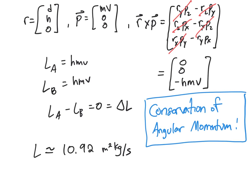And if we want to just finish that calculation, if we put in hmv into our calculator, we get 10.92 meters squared kilograms per second. The units for angular momentum are just a combination of this particular SI unit. There's no special name for the unit of angular momentum.